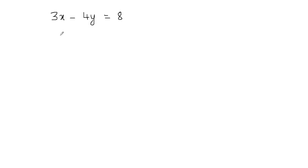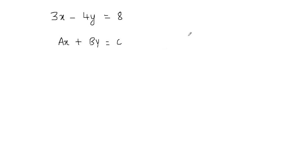Hi, in this video we'll learn how to convert a linear equation from standard form to the slope-intercept form. The standard form of a linear equation is ax plus by equals c, and the slope-intercept form is y equals mx plus b.